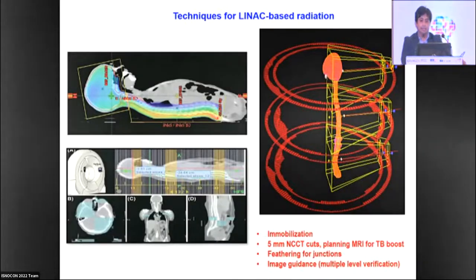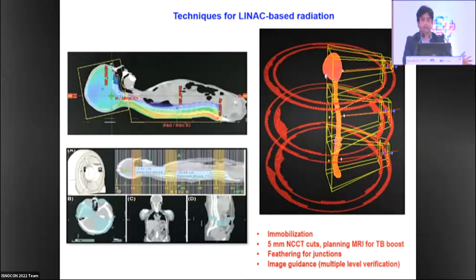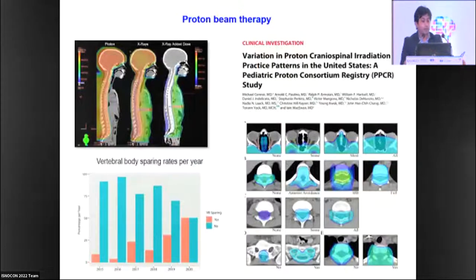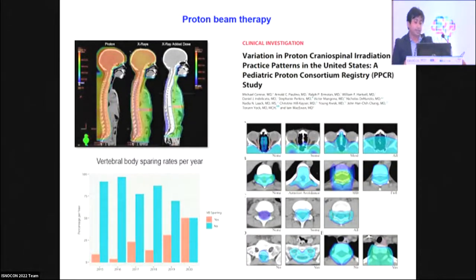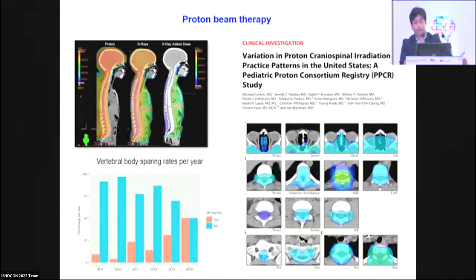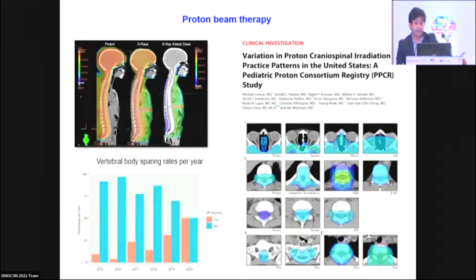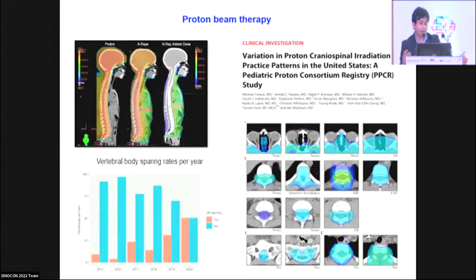Techniques of radiation include standard linac-based fixed-field geometry, helical tomotherapy (used extensively in our institute), fixed-field IMRT, and more recently — since about one year — VMAT-based IMRT. Proton therapy data is encouraging. An important consideration is that for patients receiving radiation before skeletal maturity, the sharp proton dose fall-off raises concerns about vertebral deformities — interestingly, with increasing ages, centers are using more vertebral-sparing approaches. Dr. Jalali can share more experience on this.